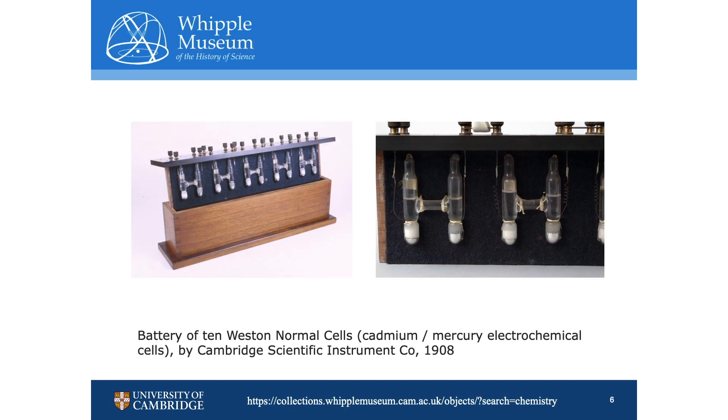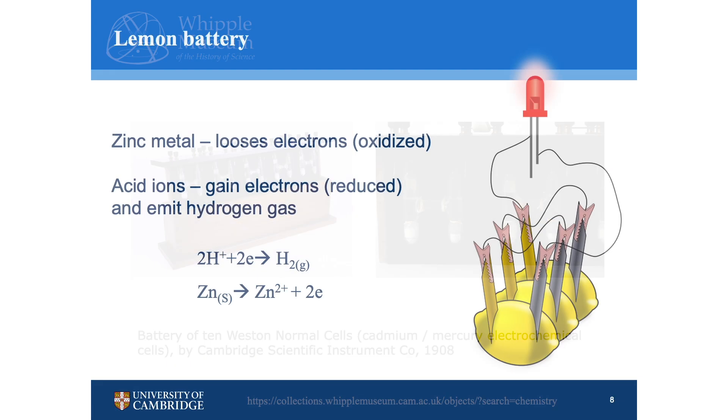These are more examples of the first batteries as they are presented in the Whipple Museum. Similarly to frog's legs, fruit can be used as an electrolyte as well. Now we're going to learn how to make a battery of a lemon.